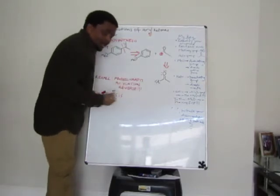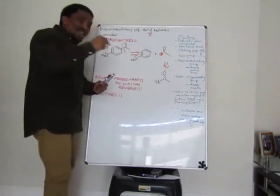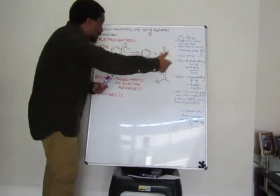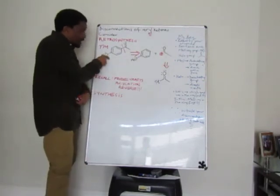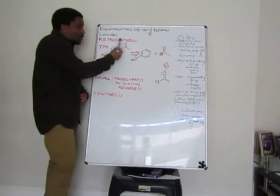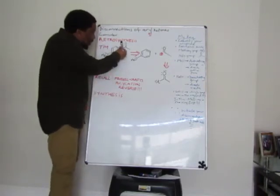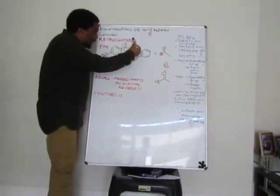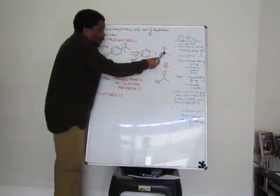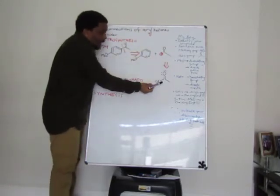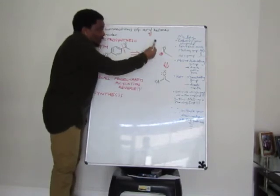Once we apply that logic, the next step is to initiate our disconnection at the side that came in later. In this case, the methoxy was in the ring first, then the keto group, so we initiate our disconnection at the keto side. We imaginary-break the molecule here. When we break it, this gives us a positive charge on this carbon atom, and applying our chemistry, this takes us to an acyl group.